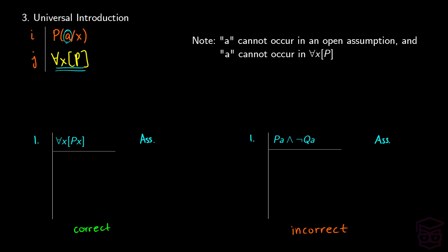I want to show you an example of using universal introduction correctly. Imagine we start with for all x, P(x). From this we say, okay, we have P(a) — and we can do this from universal elimination. Now what we can do is say for all y, P(y). We can make this claim because, first, a does not appear in line three, and the a we used to get our universal introduction was not introduced in an assumption — it came from a rule we applied earlier. So we can do it.